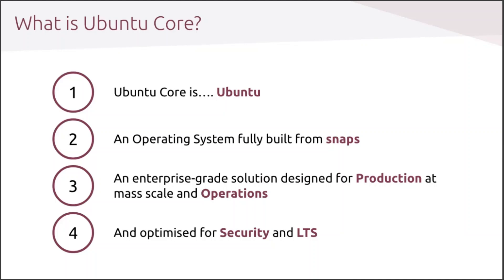The second important thing to note is that Ubuntu Core is an operating system fully built from snaps. Most of you surely know about what snaps are, but I will describe briefly the architecture later on, because it is very important to understand clearly the fundamentals of Ubuntu Core and snaps. With a simple manifest file indicating the platform and your application packages, you can generate a ready-to-go-for-production Ubuntu Core image.